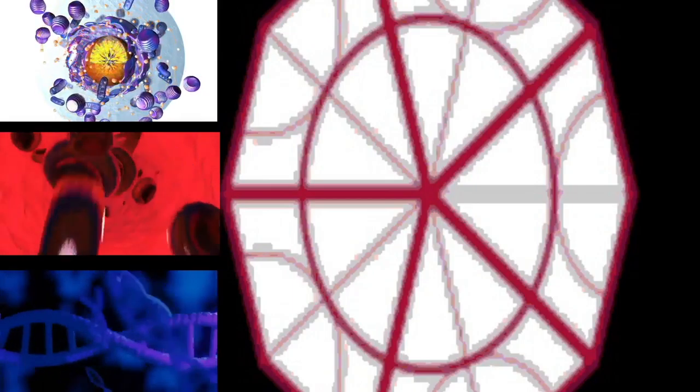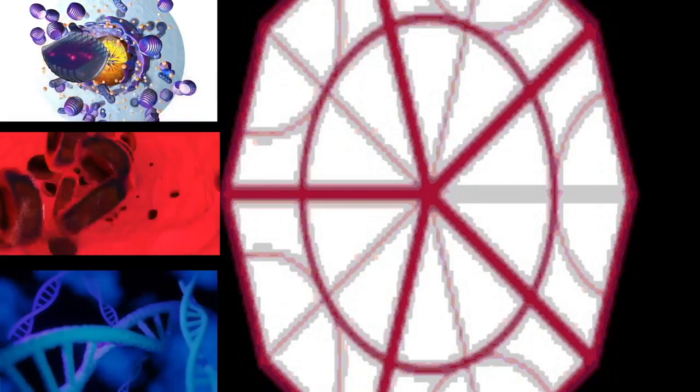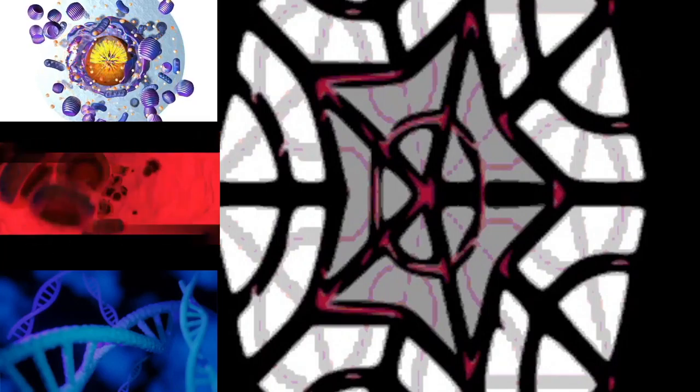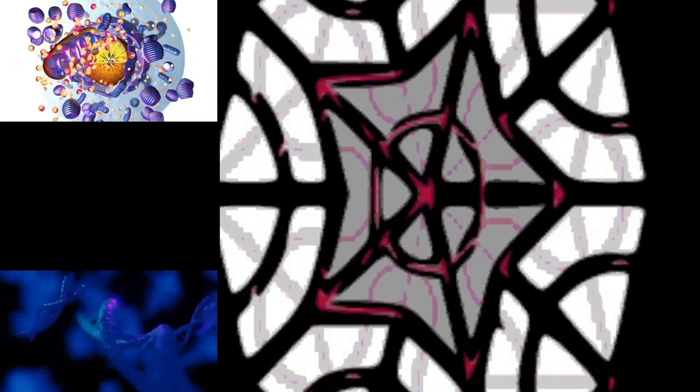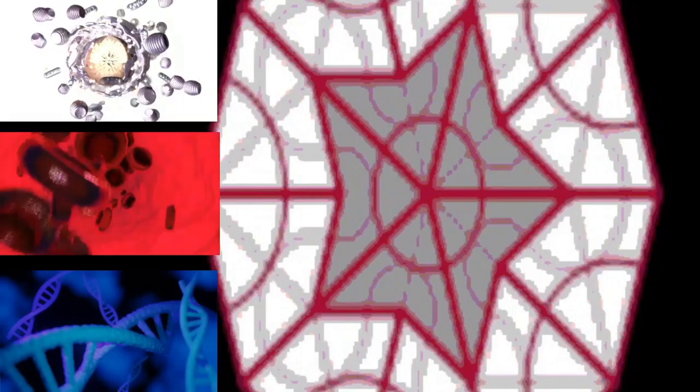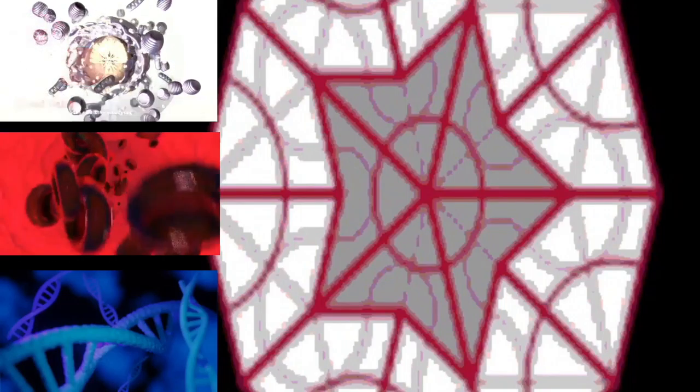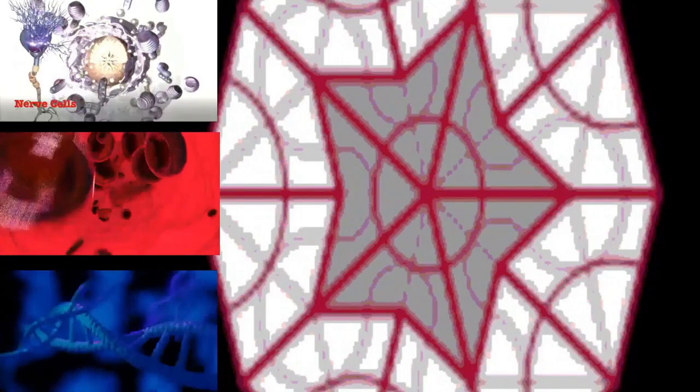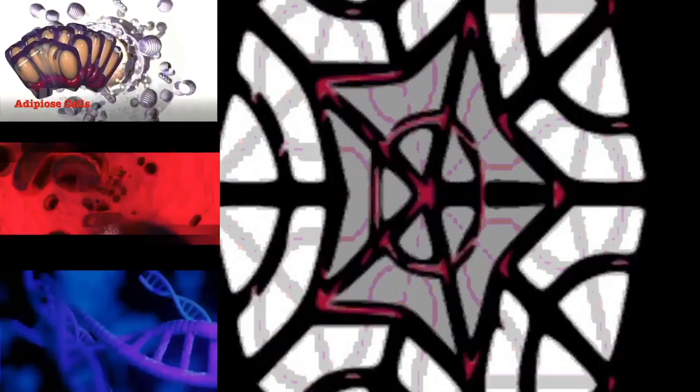During mitotic progression, typically after the anaphase onset, the cell may undergo cytokinesis. In animal cells, a cell membrane pinches inward between the two developing nuclei to produce two new cells. In plant cells, a cell plate forms between the two nuclei.